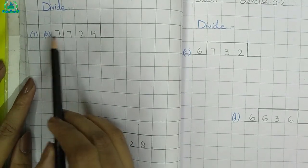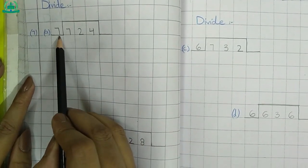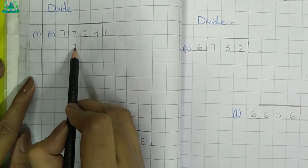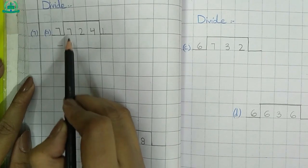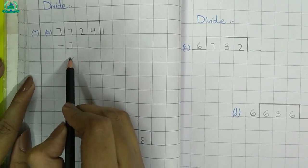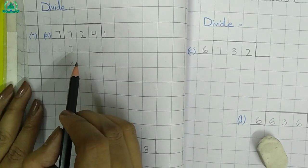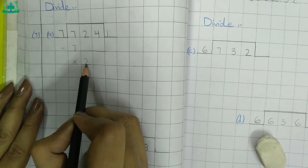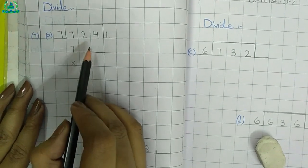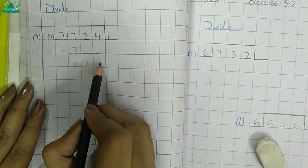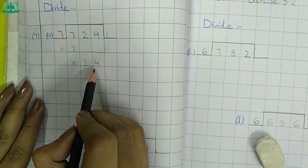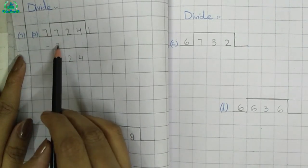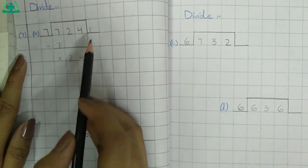Question A: 724 divided by 7. 7 times 1 is 7. Minus: 7 minus 7, no remainder. Now move on to the second digit, which is 2. Bring down 2. 2 is smaller than 7, so we take another digit: 4. Bring down 4, making 24. When we take 2 digits at a time after the 1st digit, we add 0 here in the quotient.